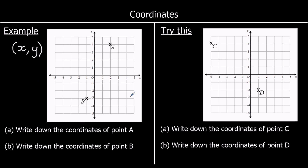The first question says write down the coordinates of point A. Here's point A. Its x-coordinate is 2 — it's 2 along the x-axis. So we write 2, then a comma, and its y-coordinate is 4. So the coordinates of point A are (2, 4).